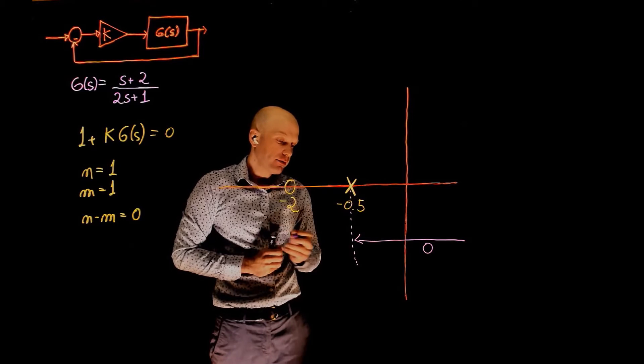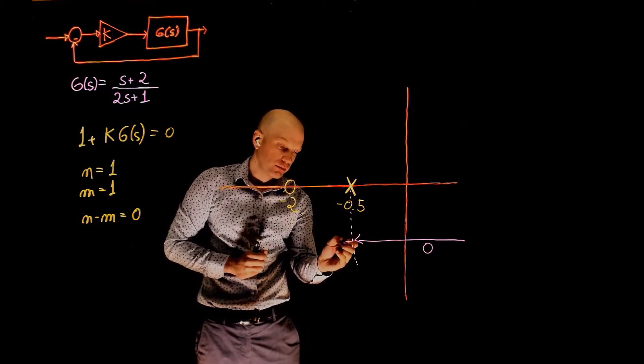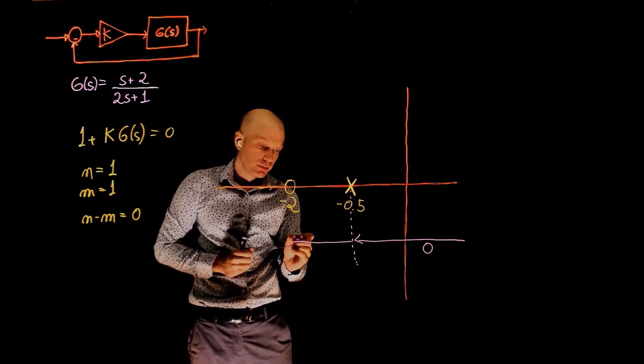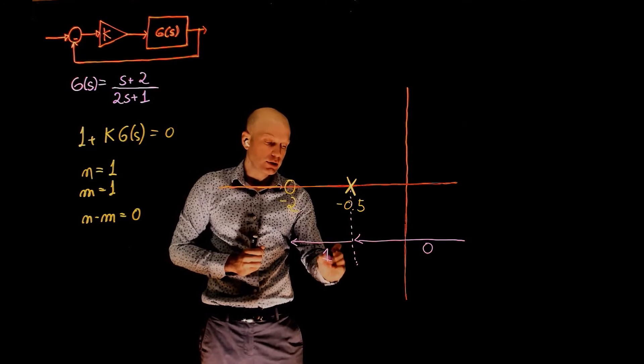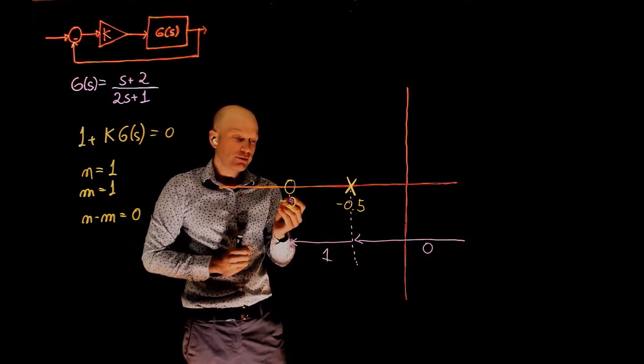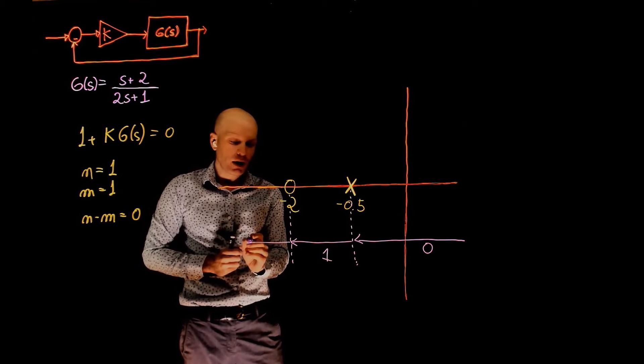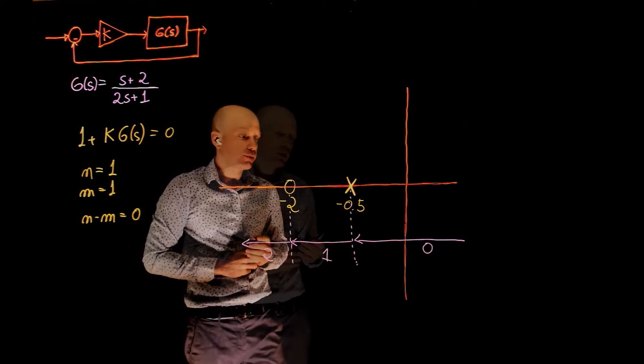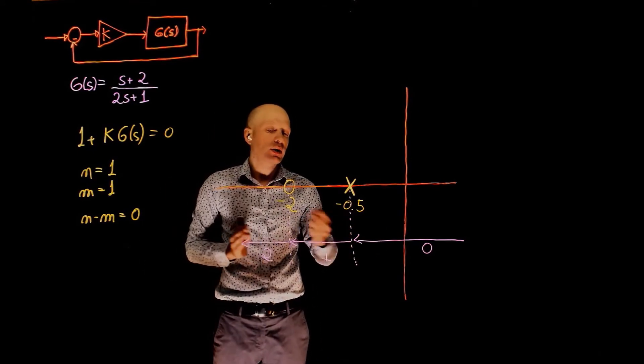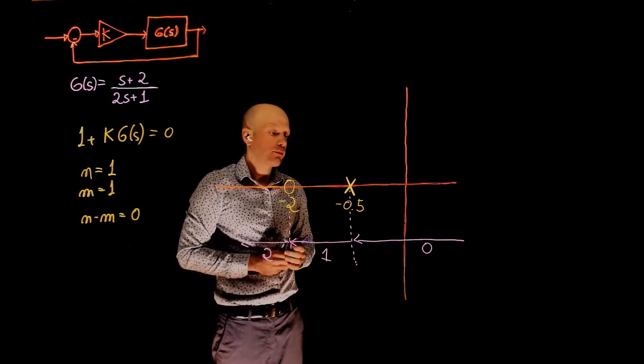When you reach negative 0.5, the count becomes 1. The count here is 1. And when you reach negative 2 and you pass negative 2, the count now becomes plus 2.